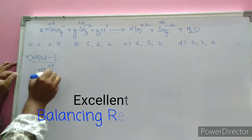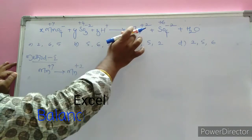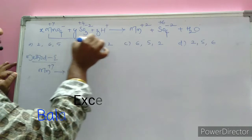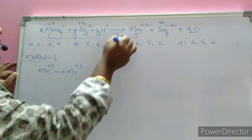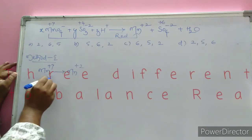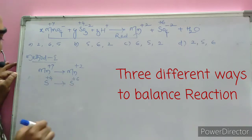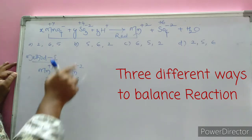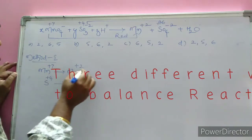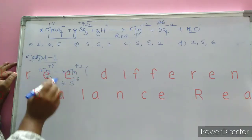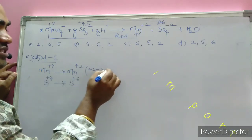In Method 1, I am identifying only those atoms whose oxidation numbers have changed. Manganese goes from +7 to +2 — a decrease in oxidation number, which we call reduction. Sulfite goes from +4 to +6 — an increase in oxidation number, which we call oxidation. Now identifying and calculating the difference in oxidation number: final minus initial.